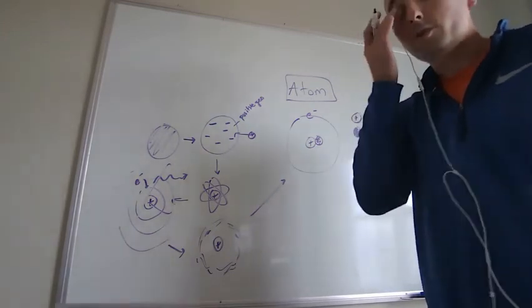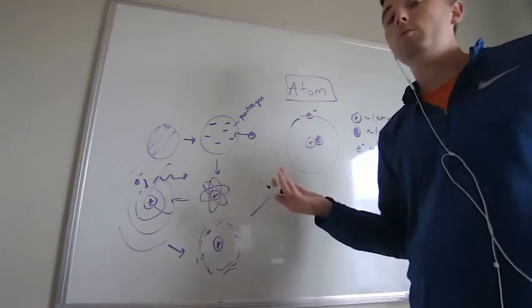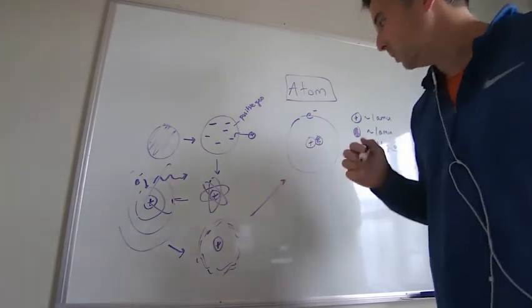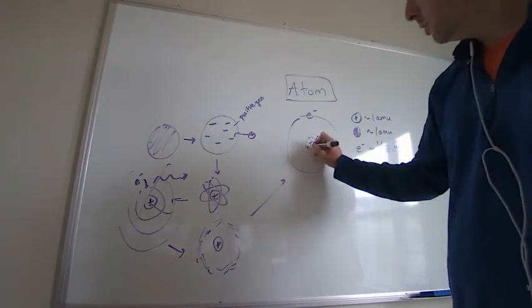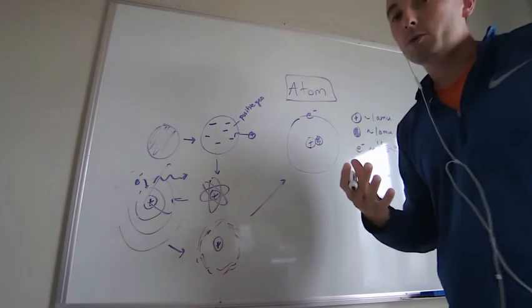The discovery of the neutron came from James Chadwick. Well, it came from a couple people, but James Chadwick gets the credit for it. We find out that inside the nucleus we have some things that have no charge but have the mass of a proton, and that's a little bit weird.